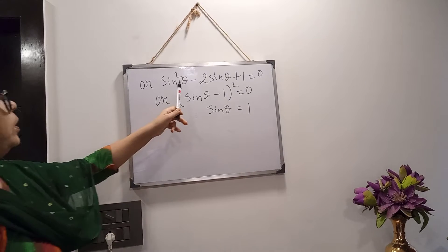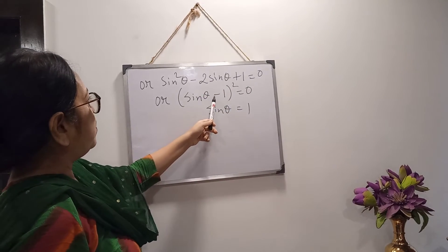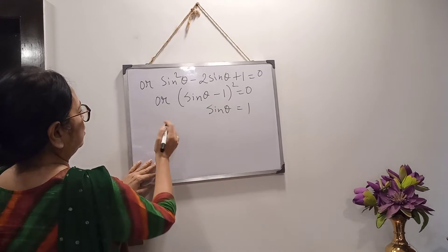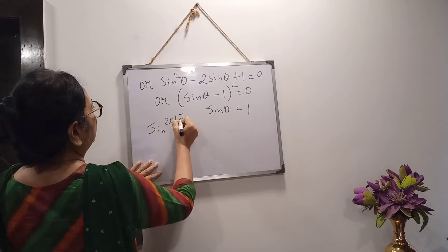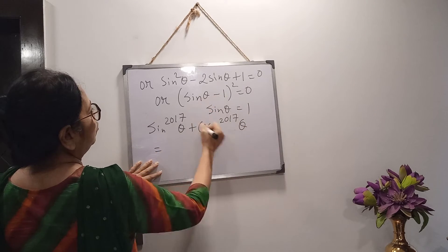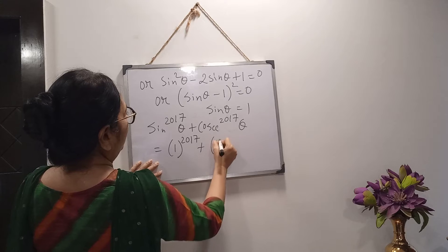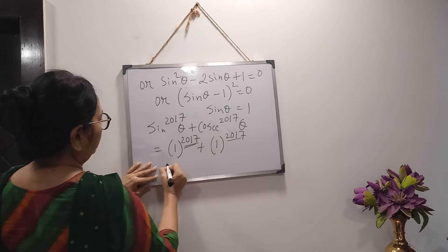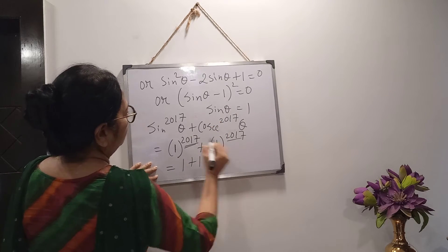Now one thing: if there is sin²θ + 2sinθ + 1 = 0, then your formula will become (sinθ + 1)² = 0, and sin θ will become -1. Same method. Now we have to calculate sin²⁰¹⁷θ + cosec²⁰¹⁷θ. Sin θ = 1, so 1 to the power of 2017 is 1. And cosec will also be 1. So whatever the number — 2017 or 1 lakh or 1 crore — the value is 1 + 1 = 2. Your answer will be 2.